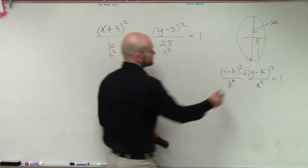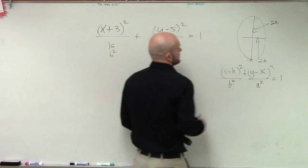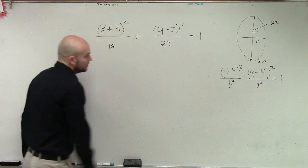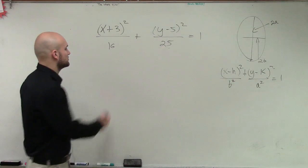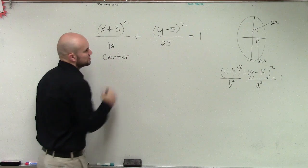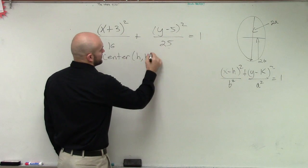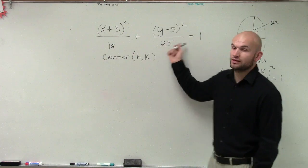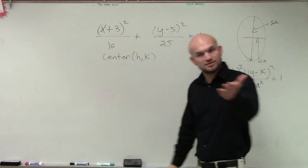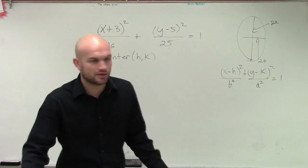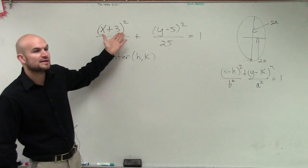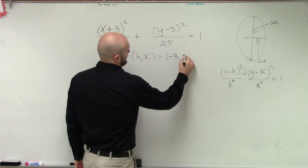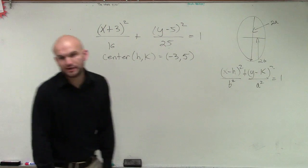Let's go ahead and figure out everything. The first thing is find the center. The center is going to be h comma k, which is very similar to the vertex of a parabola. So the center for this one is going to be opposite of 3, opposite of negative 5 — giving us negative 3, 5.